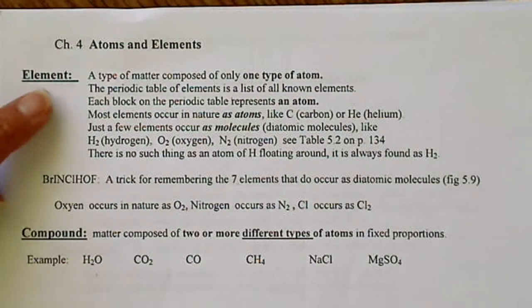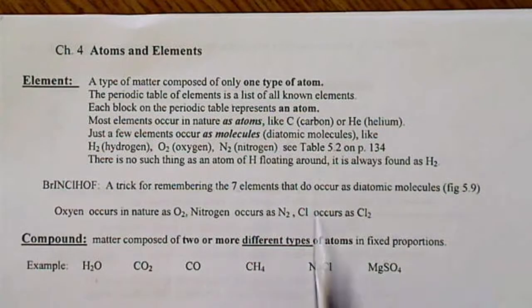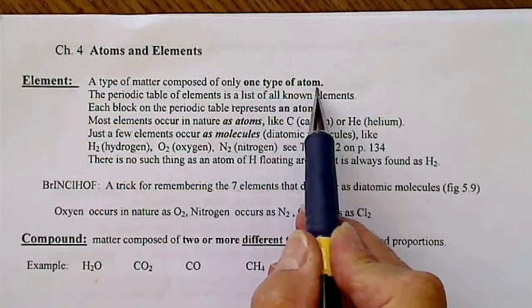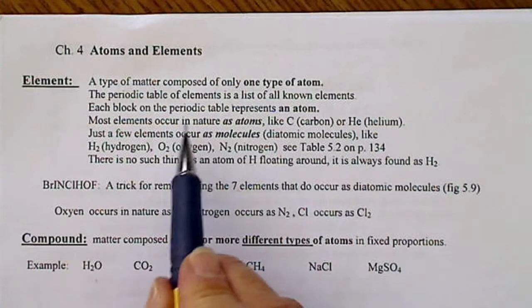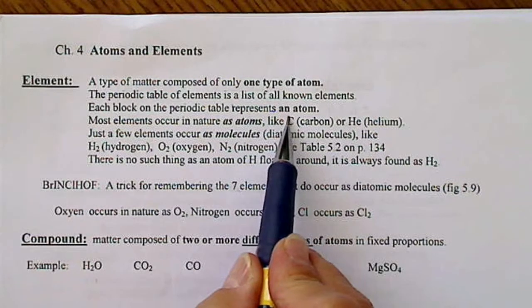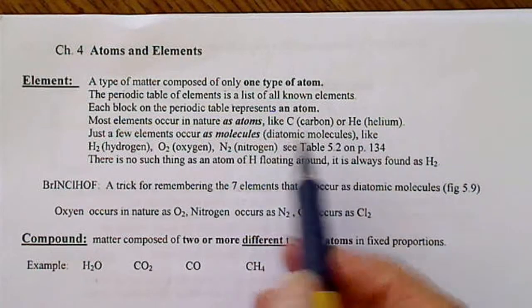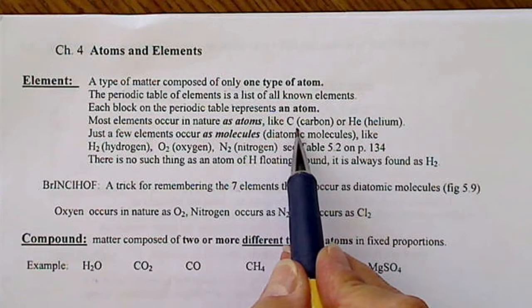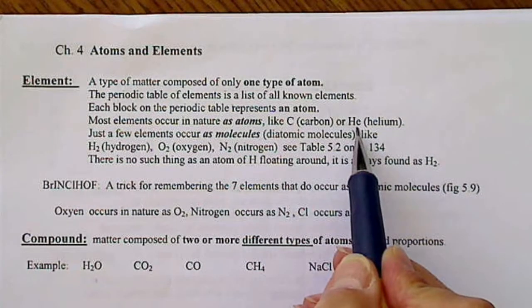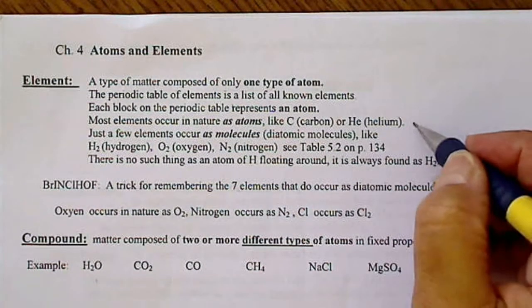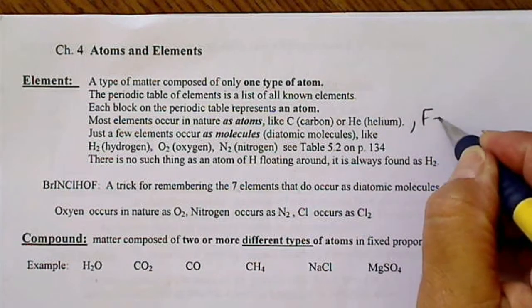So what constitutes an element is matter that's comprised of only one type of atom. And most of the elements do occur as just a single atom. The element carbon is C, the element helium is He, or the element iron is Fe.